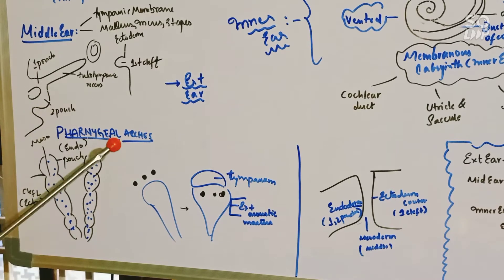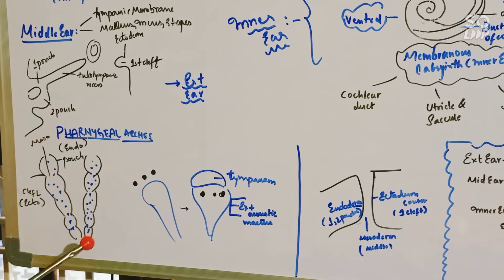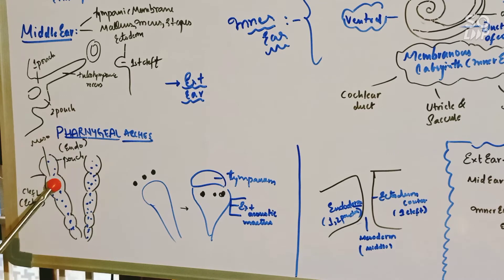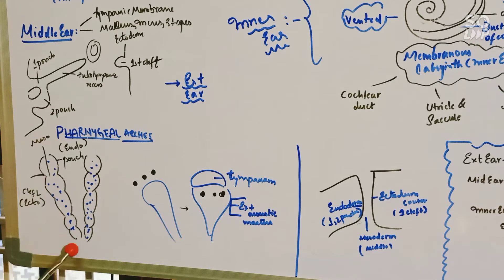Now let us see about the pharyngeal arches. In the pharyngeal arches, you can see the first pouch, second pouch, third pouch, fourth pouch, and the sixth pouch. The fifth pouch is usually axial. The inner layer forms the pouches, which are of endodermal origin. And the outer layer are the clefts, which are of ectodermal origin. And the middle is of mesodermal origin.